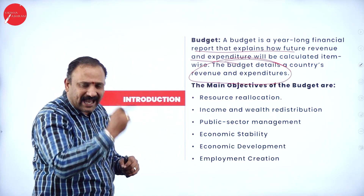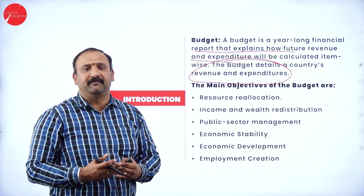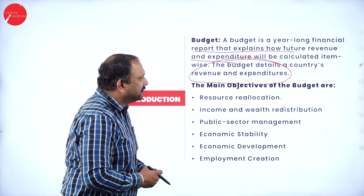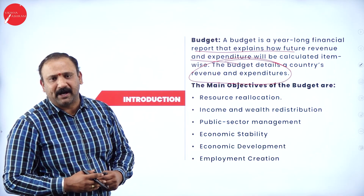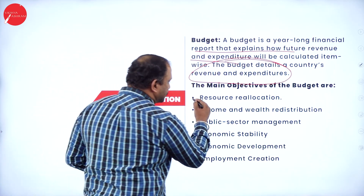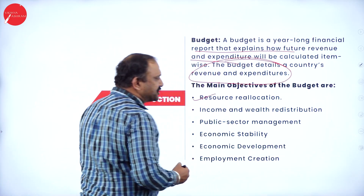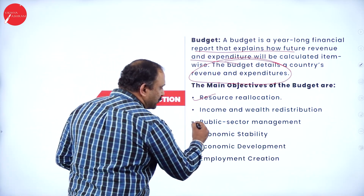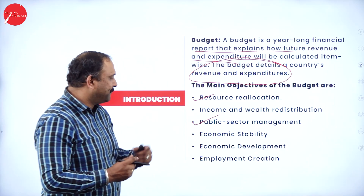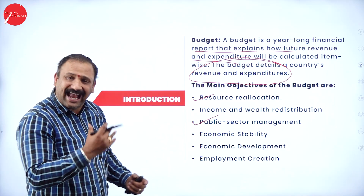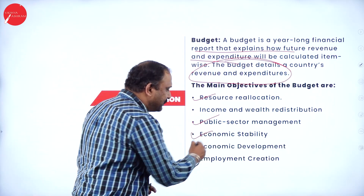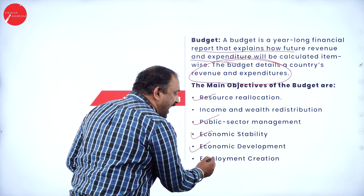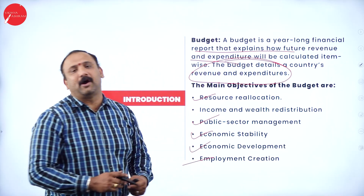This budget detail in terms of revenue and expenditure matters a lot for all of us, because it will actually help us to understand how we are going in terms of the factors of the budget — how much we need to spend, which sector we are going to give more importance, where the expenditure lies ahead for our country. So all those things would be calculated and revealed by the government to us. The main objectives of the budget are resource allocation, income and wealth distribution, public sector management, economic stability, economic development, and employment creation.